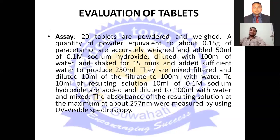Next is the assay of the tablet. For the assay, 20 tablets are powdered and a quantity of powder equivalent to about 0.15 mg of paracetamol is accurately weighed and added to 50 ml of 1 molar sodium hydroxide, diluted with 100 ml of water and shaken for 15 minutes. We take a 250 ml round-bottom flask, add the powdered tablet and add 100 ml of sodium hydroxide solution.